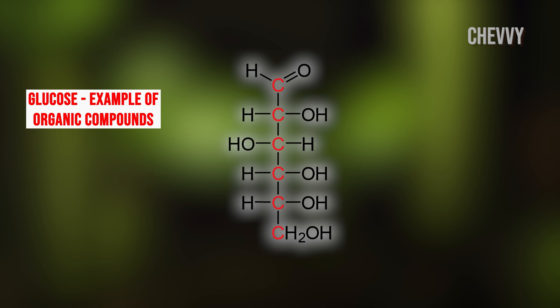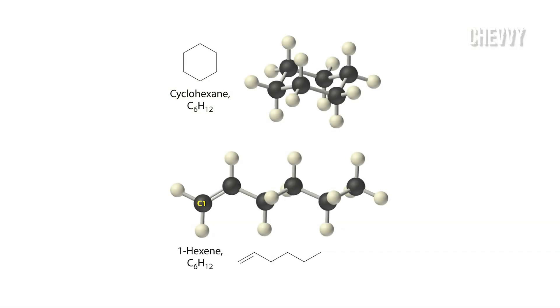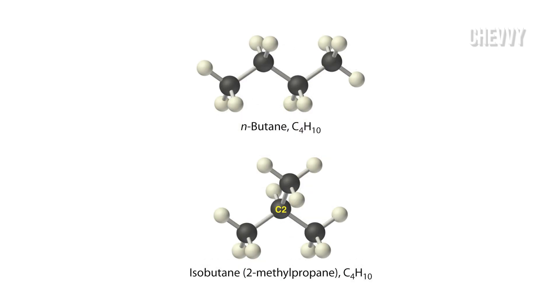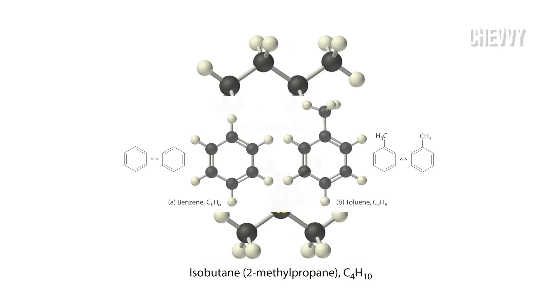Carbon's ability to create stable bonds with numerous elements, including itself, is the explanation for this. This characteristic enables carbon to create a wide range of extremely massive and complicated compounds. In fact, living things include almost 10 million carbon-based molecules.